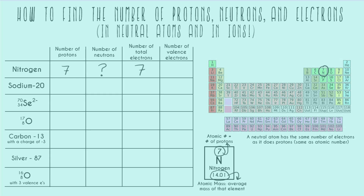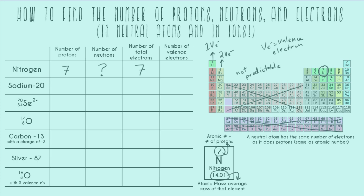Lastly, we have to find the number of valence electrons, which is the number of electrons in the outermost orbital. The trend is: starting on the left-hand column of the periodic table, everything in that column has one valence electron; the second column has two valence electrons. Getting to the transition metals, you cannot predict valence electrons with these trends. Then by the third column past the transition metals, we have three valence electrons, and we fill in up to the end. Nitrogen is in the fifth column, so it has five valence electrons.